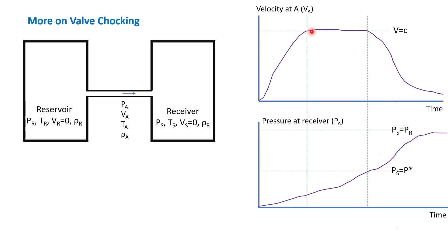Remember that you cannot achieve a velocity above that one — I will explain why. The pressure at the receiver will keep increasing until it reaches the critical pressure value. When it reaches this point, if you proceed with the transportation of gas, the pressure of the receiver increases above the critical pressure, and you will no longer have sonic velocity. The velocity at point A will start to decrease as you exceed the critical pressure in the receiver.